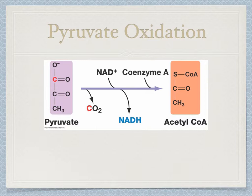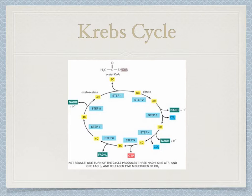The Krebs cycle can now begin. The Krebs cycle starts when acetyl-coenzyme A binds with a 4-carbon molecule to form a 6-carbon molecule. This molecule is unstable, so one carbon leaves in the form of CO2, and the electron is added to NAD+ to make NADH.